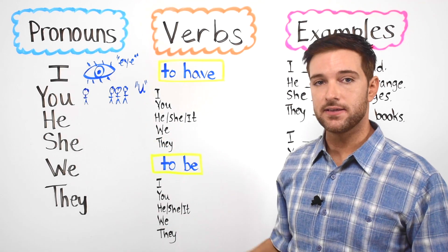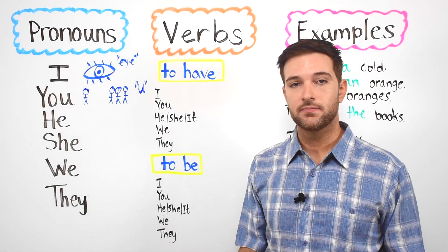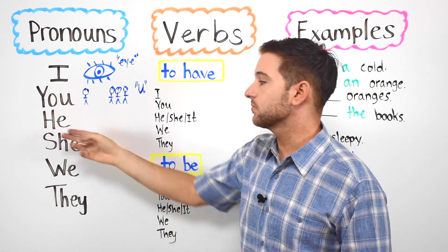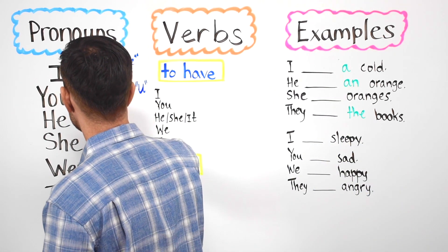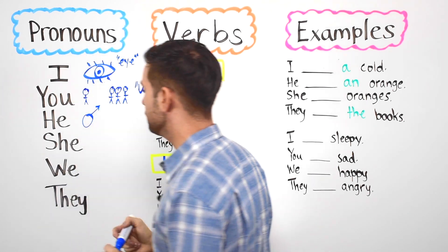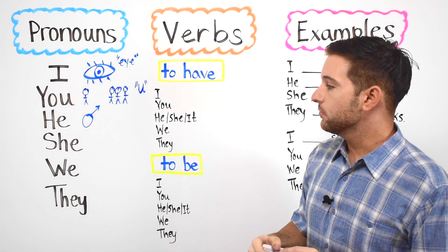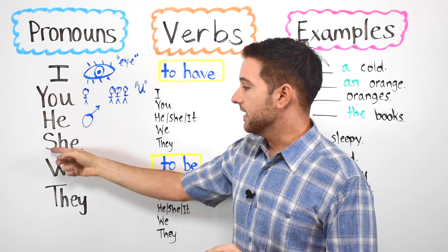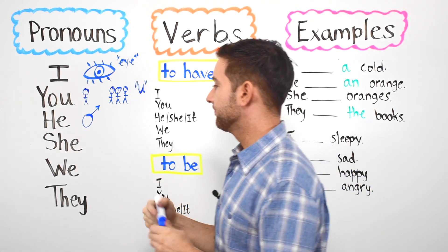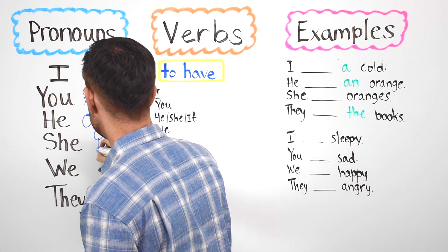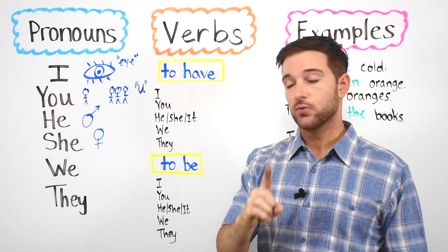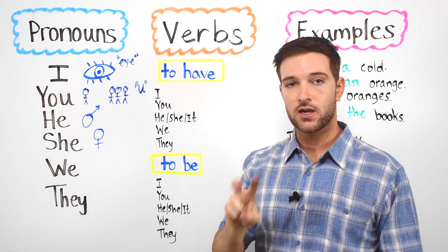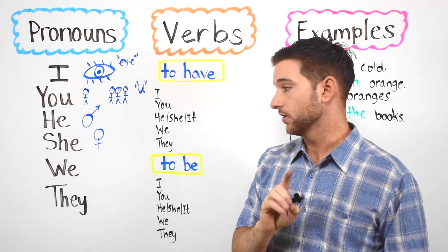Next we have he. He is used for boys. Then we have she with an S. She is used for girls. We only use he when talking about one boy and we only use she when talking about one girl.